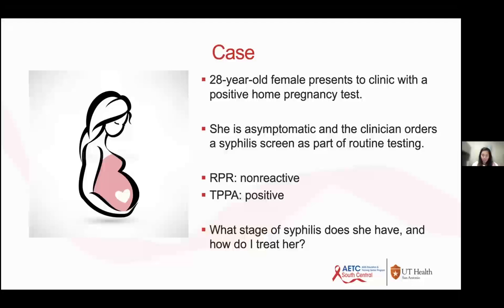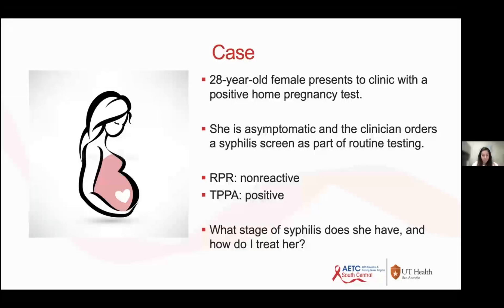We're going to start with a case. A 28-year-old female presents to the clinic with a positive home pregnancy test. She's asymptomatic, and as part of routine testing, the clinician orders a syphilis screen. As you know, they always give you two results. The RPR is non-reactive and the TPPA is positive. What stage of syphilis does she have, if she has syphilis at all, and how do I treat her? We'll come back to this case at the end.